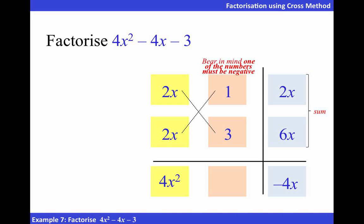This is only possible if 6x is negative and 2x is positive. Now, let's work backwards.